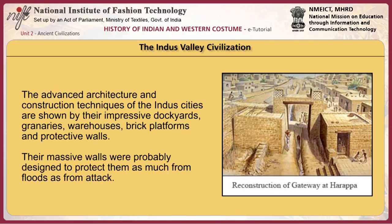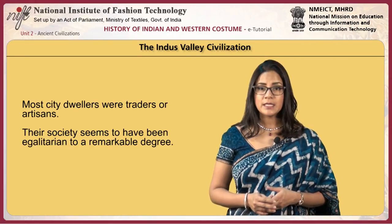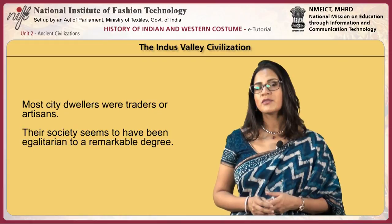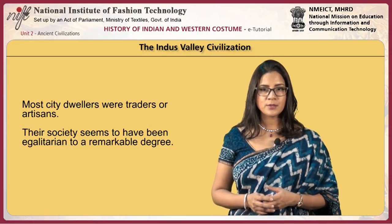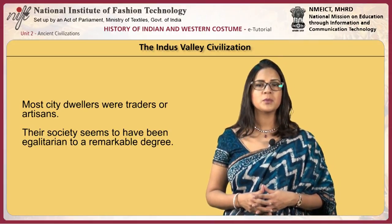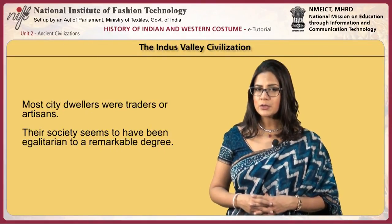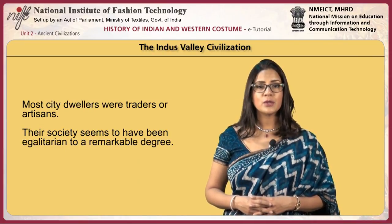The advanced architecture and construction techniques of the Indus cities are shown by their impressive dockyards, granaries, warehouses, brick platforms and protective walls. Their massive wall buildings were probably designed to protect them as much from floods as from attack. Most city dwellers were traders or artisans who lived with others of the same occupation in well-defined neighborhoods. Although some houses were larger than others, the civilization's cities do not show the kind of massive gulf between wealthy and poor dwellings found in other civilizations. Their society seems to have been egalitarian to a remarkable degree.